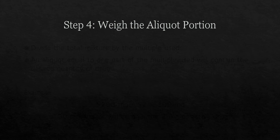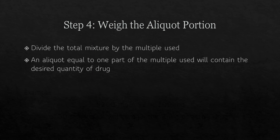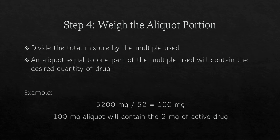Step 4: weigh the aliquot portion. Divide the total mixture by the multiple used. An aliquot equal to one part of the multiple used will contain the desired quantity of drug. Continuing with the example, 5,200 milligrams divided by 52 equals 100 milligrams. That 100 milligram aliquot will contain the 2 milligrams of active drug — one out of every 52 parts of the 5,200 milligrams equals 100 milligrams, which contains the 2 milligrams of active drug.